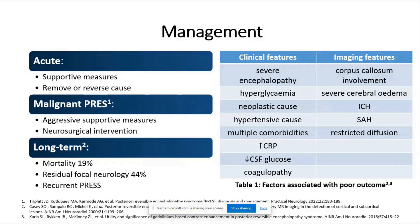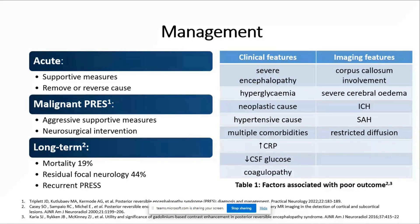Malignant PRES is defined as coma with evidence of cerebral edema on neuroimaging and deterioration of the patient despite standard treatment for raised intracranial pressure. Management involves quite aggressive supportive measures, which can include mechanical ventilation, and sometimes patients may require neurosurgical intervention.